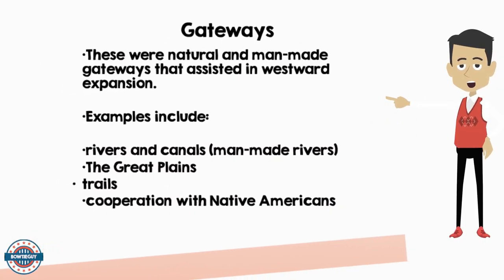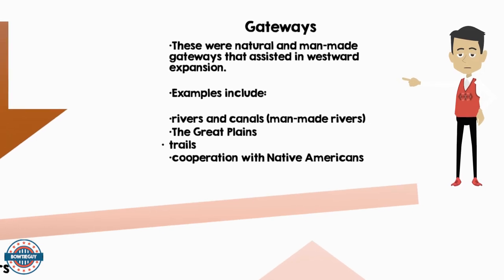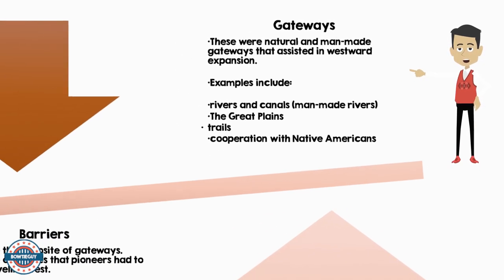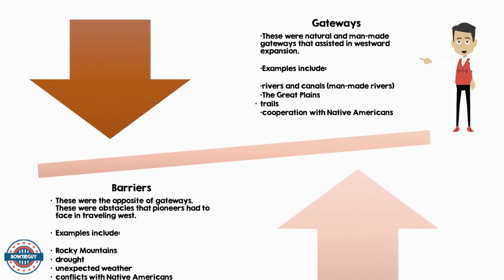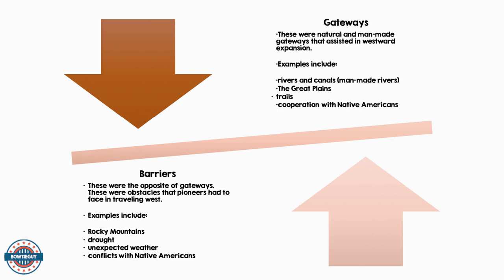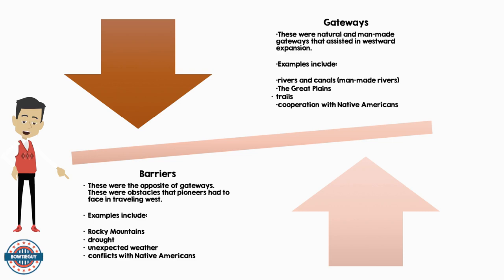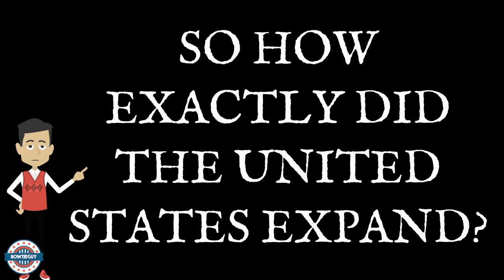There were natural and man-made gateways that assisted in westward expansion. Examples include rivers and canals — a canal is a man-made river — the flat Great Plains made great for traveling, and there were many trails that had already been trodden on before, in cooperation with Native Americans. Barriers are the opposite of gateways. Barriers are obstacles that pioneers had to face in traveling west. Examples include the Rocky Mountains, drought, unexpected weather, and conflicts with Native Americans.